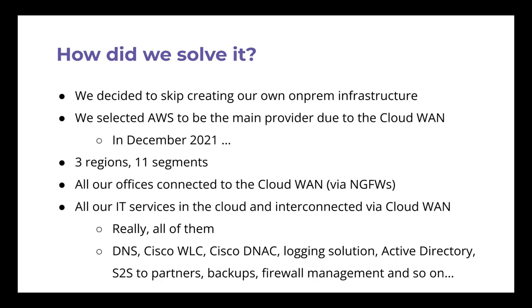What I was describing today might not be true in a year or two. Right now we ended up with three regions and 11 different segments — so it's not that expensive after all. All our offices are connected to Cloud WAN via those firewalls. All our IT services are connected by cloud, and the APs you see above you are controlled by a cloud-connected service. Even DNS is Route 53 as a service, with delegation and forwarders all done through Cloud WAN. If you have a forwarder for some domain pointing to your old on-prem infrastructure, you just put that IP in — done. Then we have the Cisco WLC; we even use Cisco DNA for controlling it, hosted in one of our provider data centers — again connected via Cloud WAN.